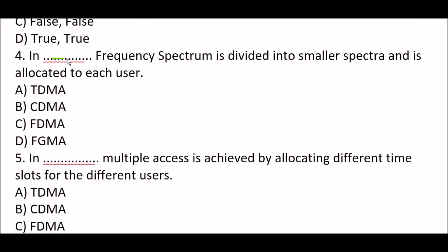Next question: In blank, frequency spectrum is divided into smaller spectrum and is allocated to each user. Option A: DDMA. Option B: CDMA. Option C: FDMA. Option D: FGMA. The right answer is Option C, FDMA. In FDMA, frequency spectrum is divided into smaller spectrum and is allocated to each user.